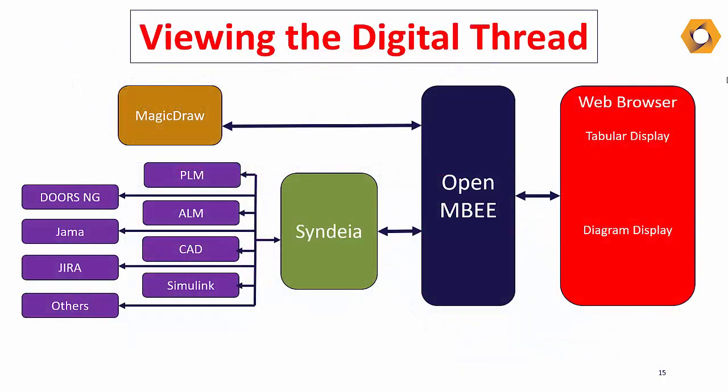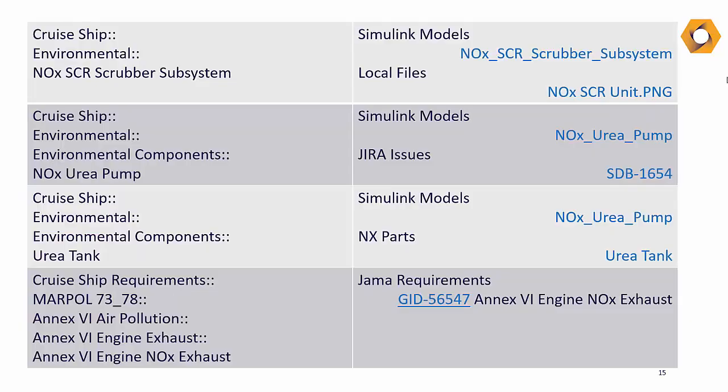When documents are part of the deliverables, Syndea Cloud's REST API makes it easy to extract the data in the format you need it, wherever it lives in the digital web. Here, the view editor from the OpenMBE platform developed by the Jet Propulsion Labs is creating a list of SysML model elements and using Syndea to generate a table of all the connected elements, including PLM and Jira issues that each is connected to, with the table entries being links to the elements themselves.